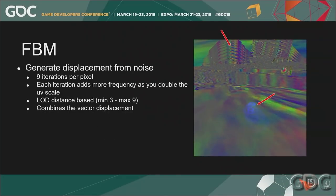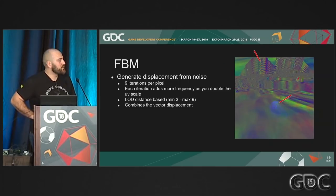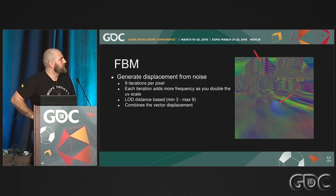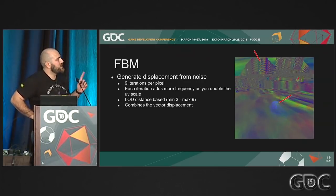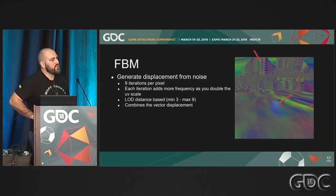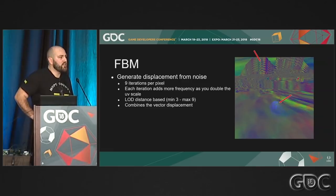We moved away from artist-painted normal maps because they create repetition. Instead, we generate noise for the general surface shape — high-frequency noise — using fractional Brownian motion (FBM) with nine iterations per pixel. Each iteration adds more frequency as the UV scale doubles. This is fairly expensive — nine texture fetches per pixel — so we use an LOD approach: three fetches in the distance, nine up close. We don't go to zero because reflections look bad in the distance. Importantly, this texture is not cleared between passes; a valid mask tells us where water is, and each pass checks before sampling.